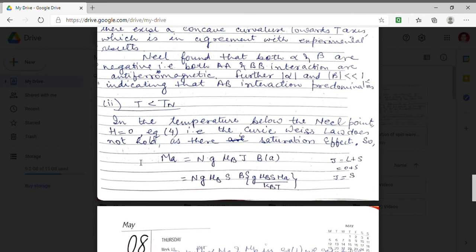So in this condition MA will be equal to at A site NG mu B j BA. BA means Brillouin function, mu B Boer magneton, G is the Linde G factor and capital J this is the total quantum number which is equal to L plus S. Orbital motion has no contribution in magnetization. Only contribution is of spin. So J will be equal to S.